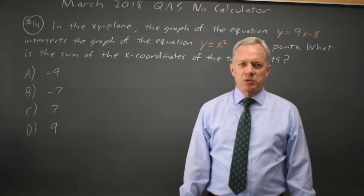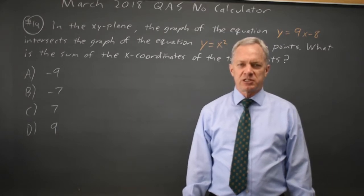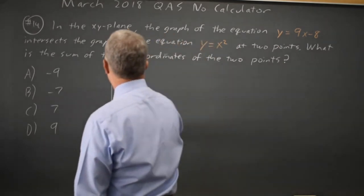This is question 14. The College Board gives us the equations of a line and a parabola and asks for the sum of the x-coordinates of the points of intersection. We can estimate this to rule out a couple of answer choices.